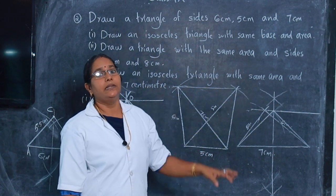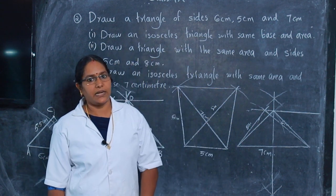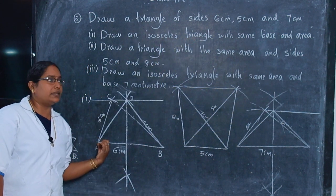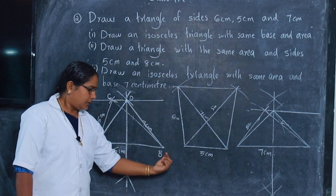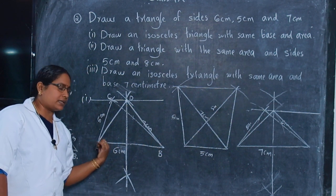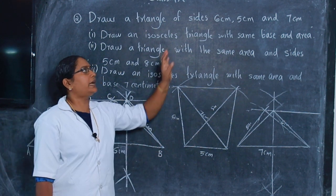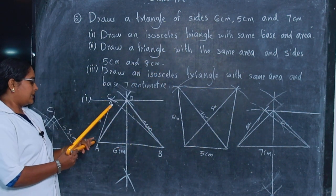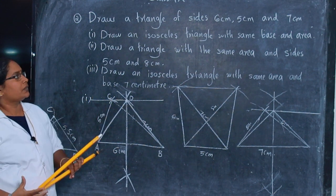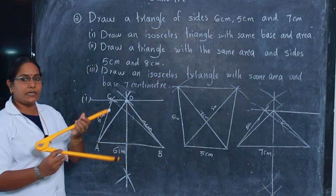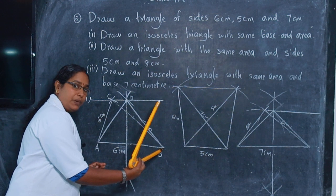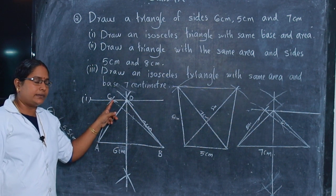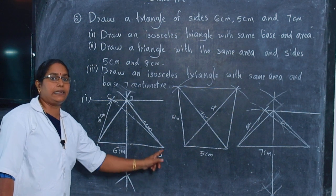You are already studying how to draw triangles. First, draw any suitable side — I draw 6 centimeter first, then mark two points A and B at the ends. Take compass at 5 centimeter and cut one arc. Again, take 7 centimeter in compass, fix it at B and mark an arc. The intersected point is marked C. Therefore, we get triangle A, B, C.